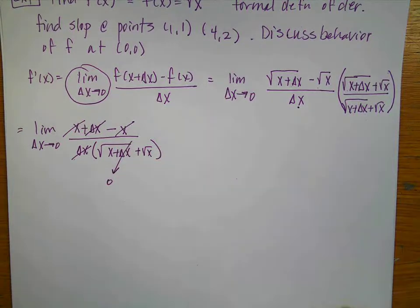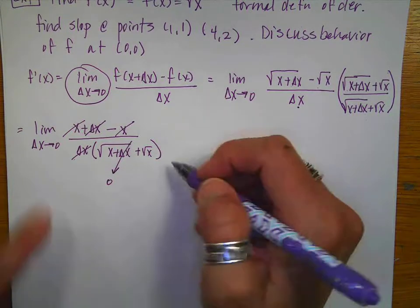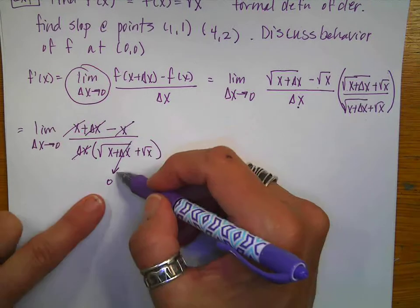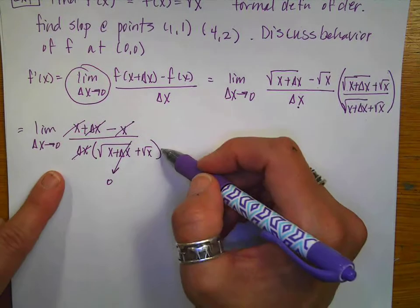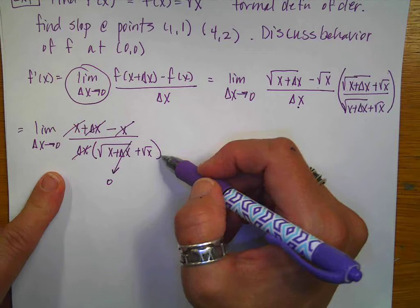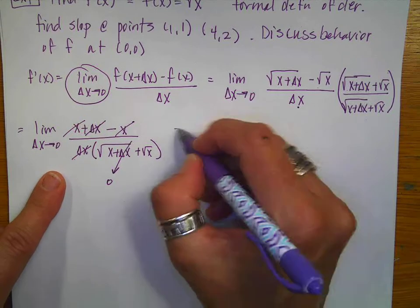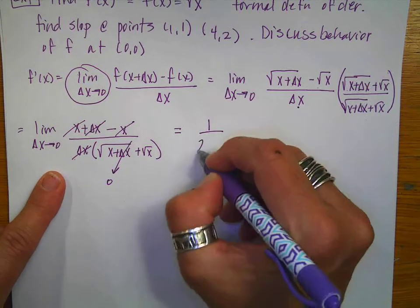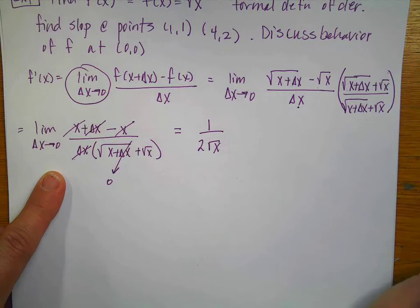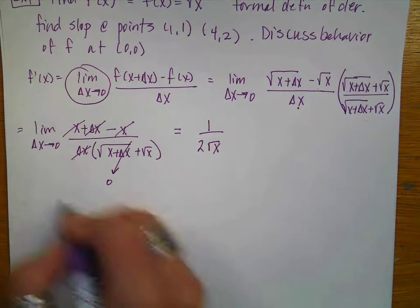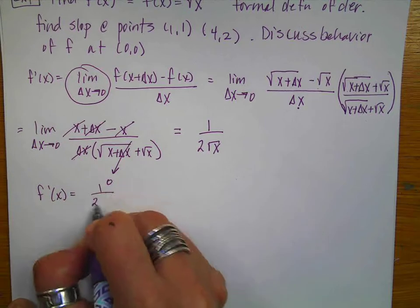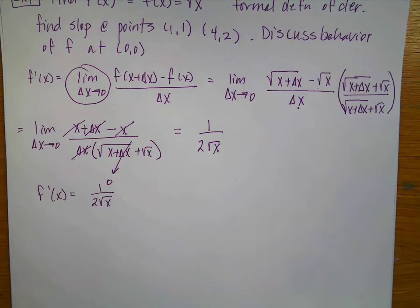As delta x goes to 0, that term goes to 0. You can show all this eliminating work, but it has to be legible so the reader can follow. This gives us 1 over 2 square root of x, and we're done. My conclusion statement: f prime of x is equal to 1 over 2 square root of x.